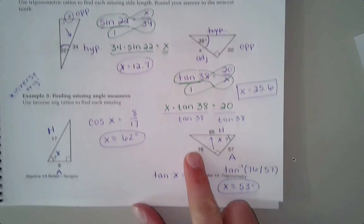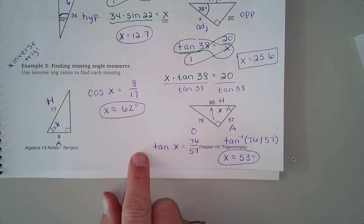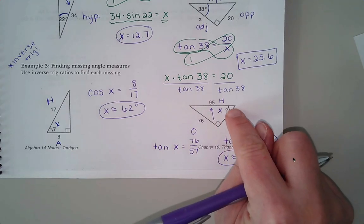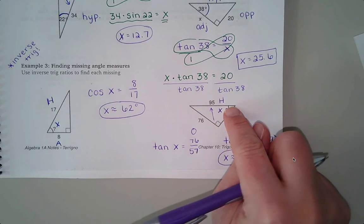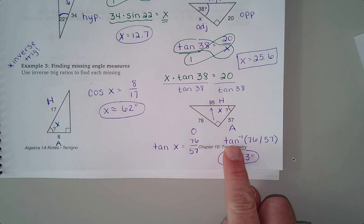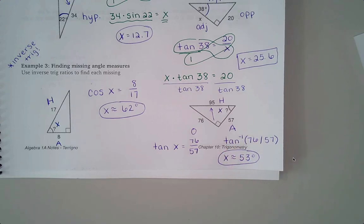Down here, we wanted to know what is the actual angle measure. We wanted to know what does that angle equal, and that's why we took this step of doing the inverse tan. Up in example one, we didn't do inverse sine, although we could have, because we weren't trying to find what the angle measure was.